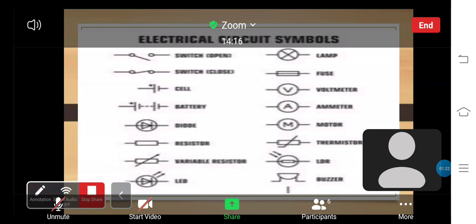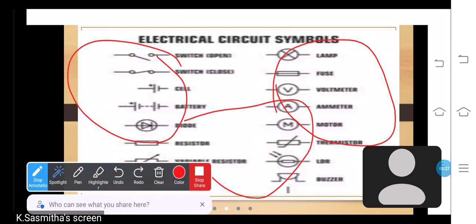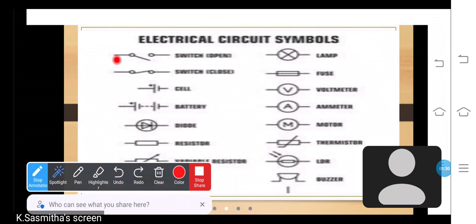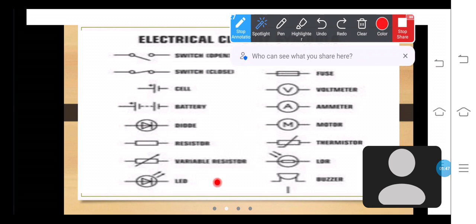Electrical circuit symbols: This is switch off. This is cell. This is battery symbol. This is light symbol. This is resistor symbol. This is LED symbol. This is LDR symbol. This is ammeter symbol. This is voltmeter symbol.